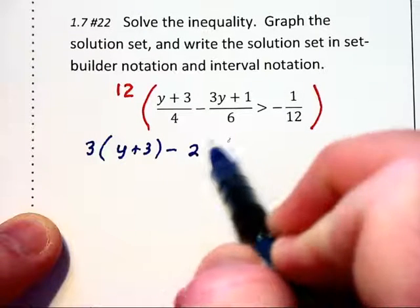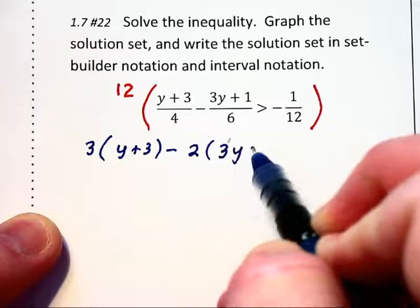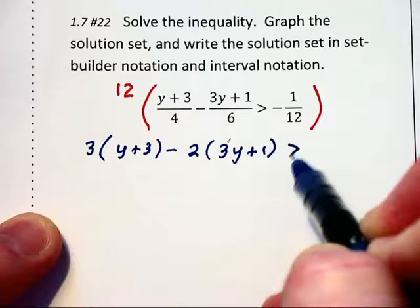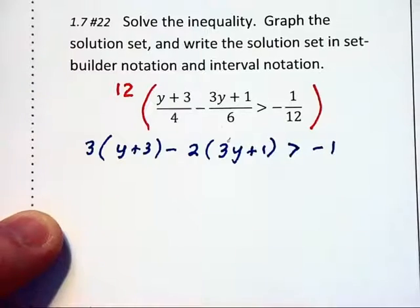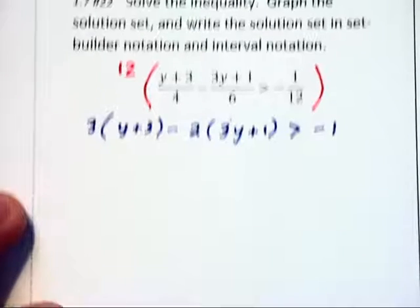Leaving 2 times the 3y plus 1, which is in the numerator, is greater than negative 1. Negative 1 is what is left after the 12's cancel.